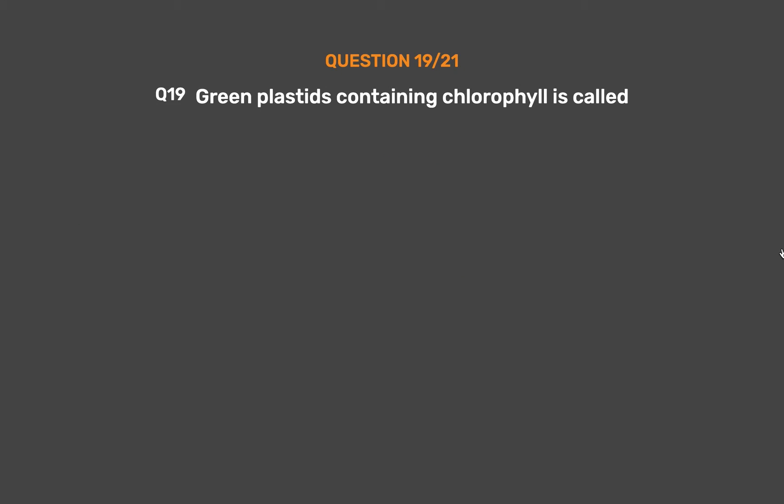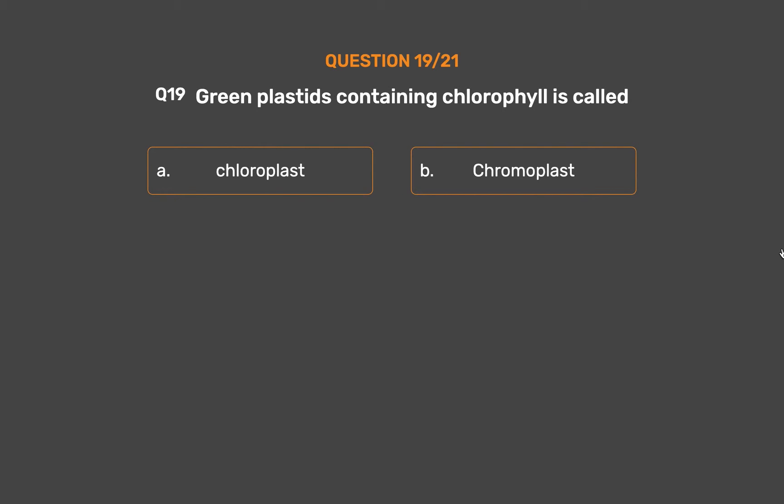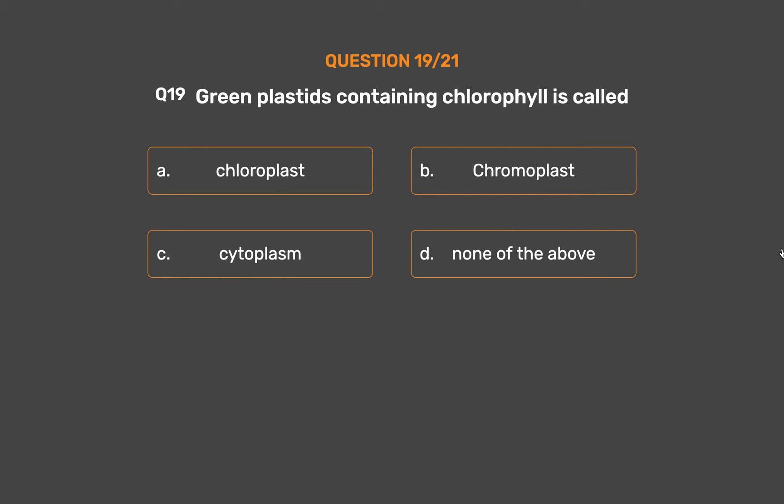Question No. 19: Green plastids containing chlorophyll is called. Option A: Chloroplast. Option B: Chromoplast. Option C: Cytoplasm. Option D: None of the above.